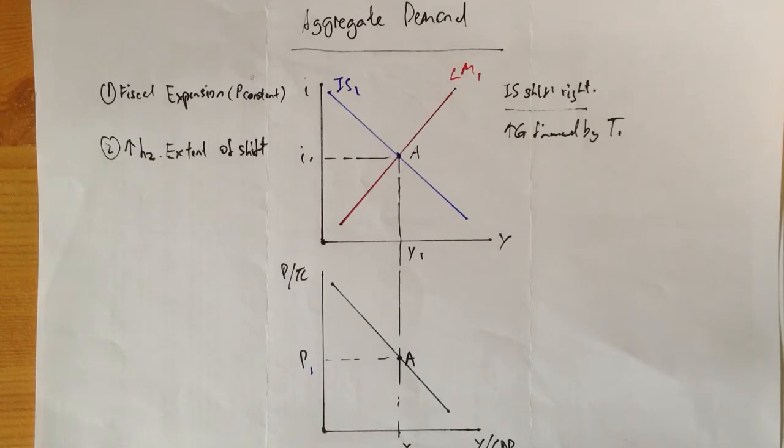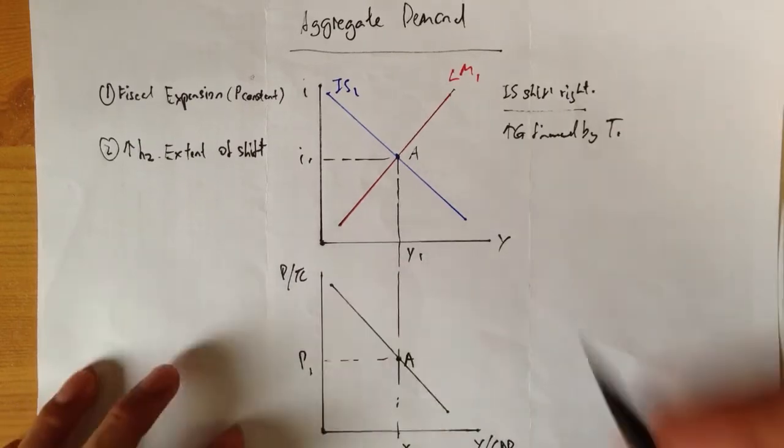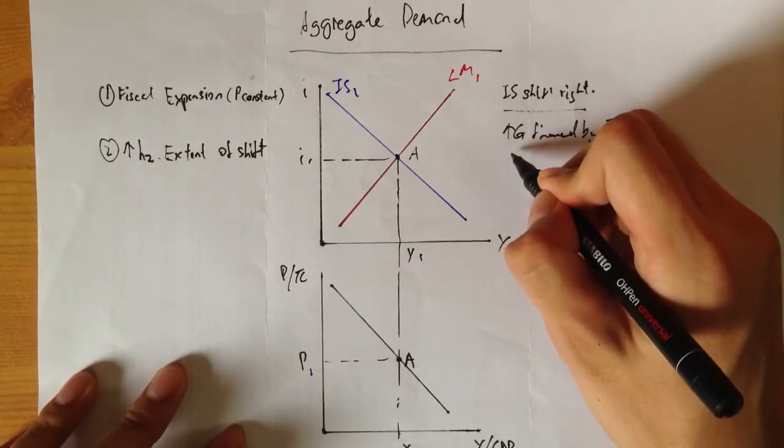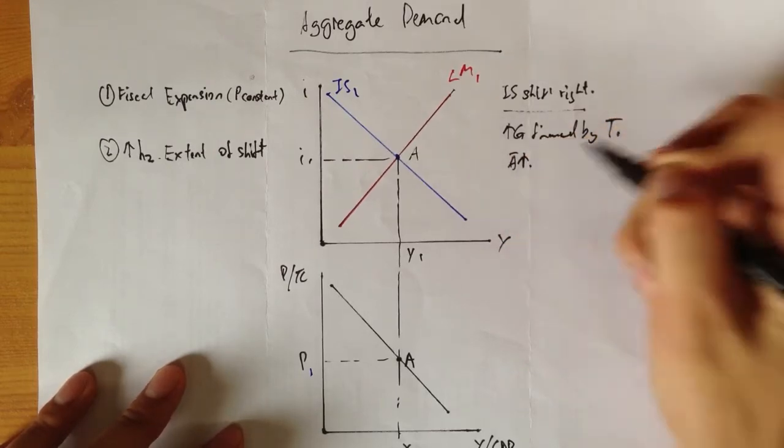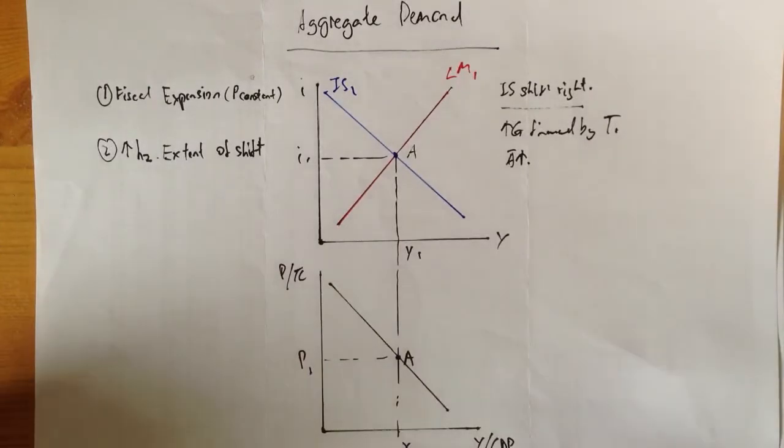We know that because of the multiplier, the autonomous component of your IS function is going to increase. In this case, your IS is going to shift right.